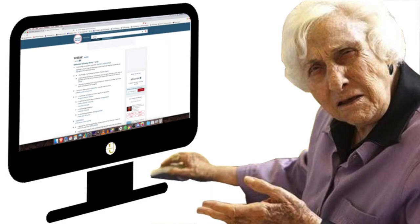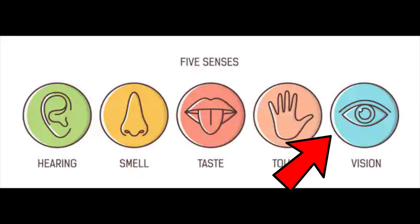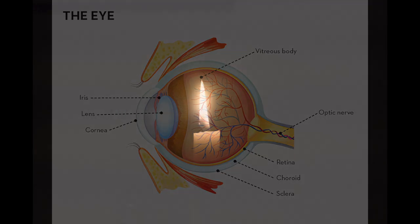What is sight and what are the senses? A sense is a specialized function or mechanism such as sight, hearing, smell, taste or touch, by which an animal receives and responds to external or internal stimuli. In the case of sight, external stimuli stimulates the sense organ called the eyes. The external stimuli for the sense of sight is light.